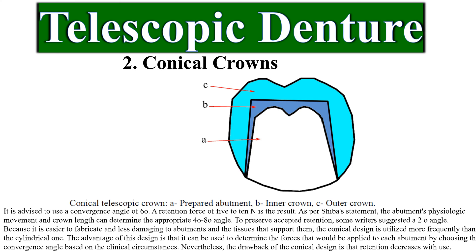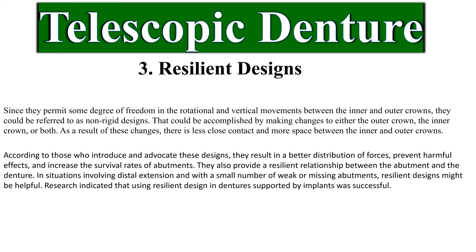Resilient designs — since they permit a degree of freedom in rotational and vertical movements between the inner and outer crowns, they could be referred to as non-rigid designs. That could be accomplished by making changes to either the outer crown, the inner crown, or both. As a result, there is less close contact and more space between the inner and outer crowns. According to those who advocate these designs, they result in better distribution of forces, prevent harmful effects, and increase the survival rates of abutments. They also provide a resilient relationship between the abutment and the denture. In situations involving distal extension with a small number of weak or missing abutments, resilient designs might be helpful. Research indicated that using resilient design in dentures supported by implants was successful.